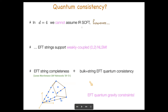On the other hand, experience from explicit UV completions provided by string theory led us to propose that not only is the bulk sector around the string weakly coupled, but also the worldsheet sector can be considered as weakly coupled — in particular, it can be described by a weakly coupled (0,2) nonlinear sigma model.